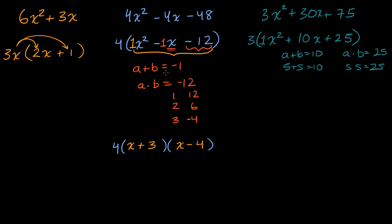And so just using the exact technique we just did, you'd say, okay, this is three times, and the stuff in parentheses would be x plus five times x plus five. Or you could say 3 times (x + 5)².